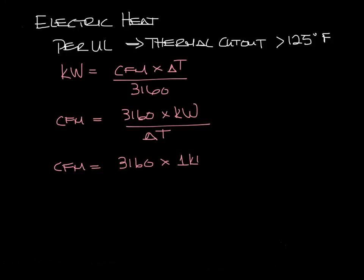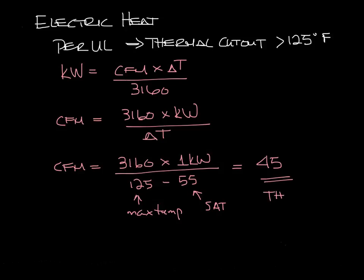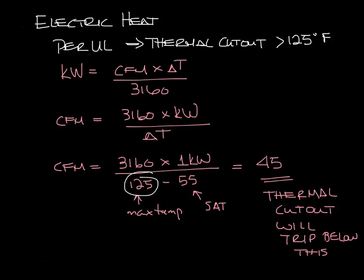We can calculate the minimum CFM for 1KW that gives us 125 degrees: 3160 times 1KW divided by 125 minus 55, which is the supply air temperature of a single duct box. And that comes out to 45 CFM. Since it's 1KW, it's basically 45 CFM per KW is where the thermal cutouts will start tripping.